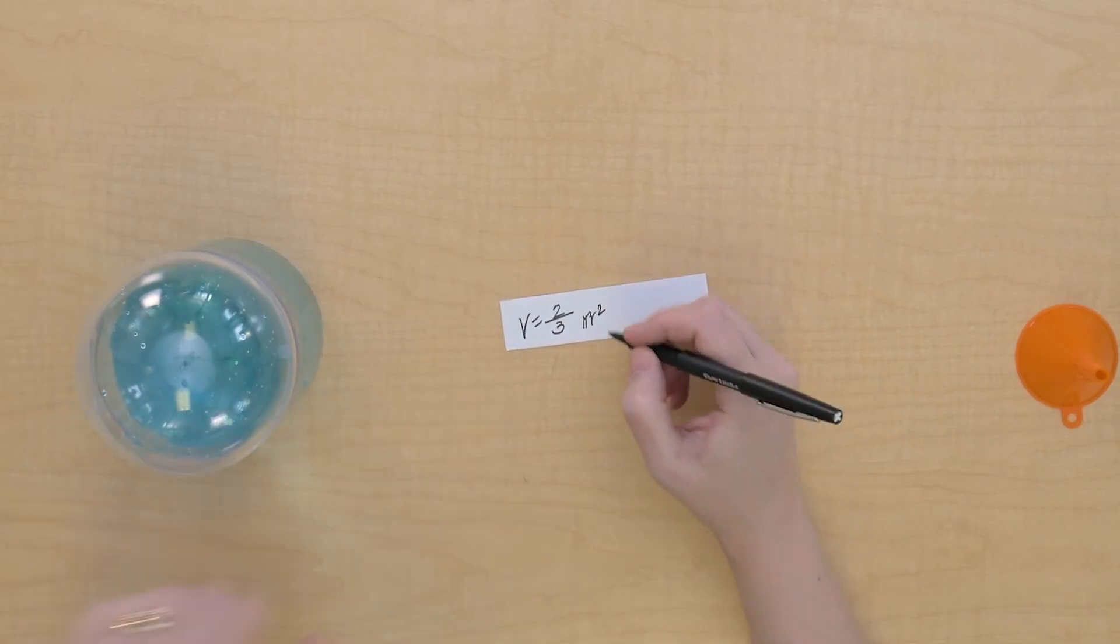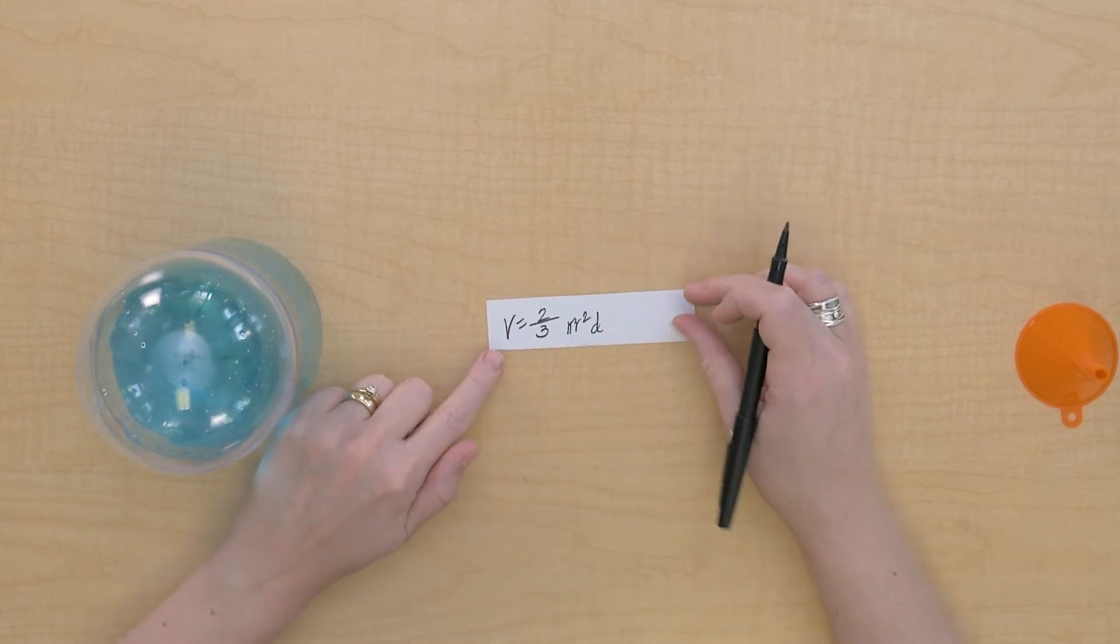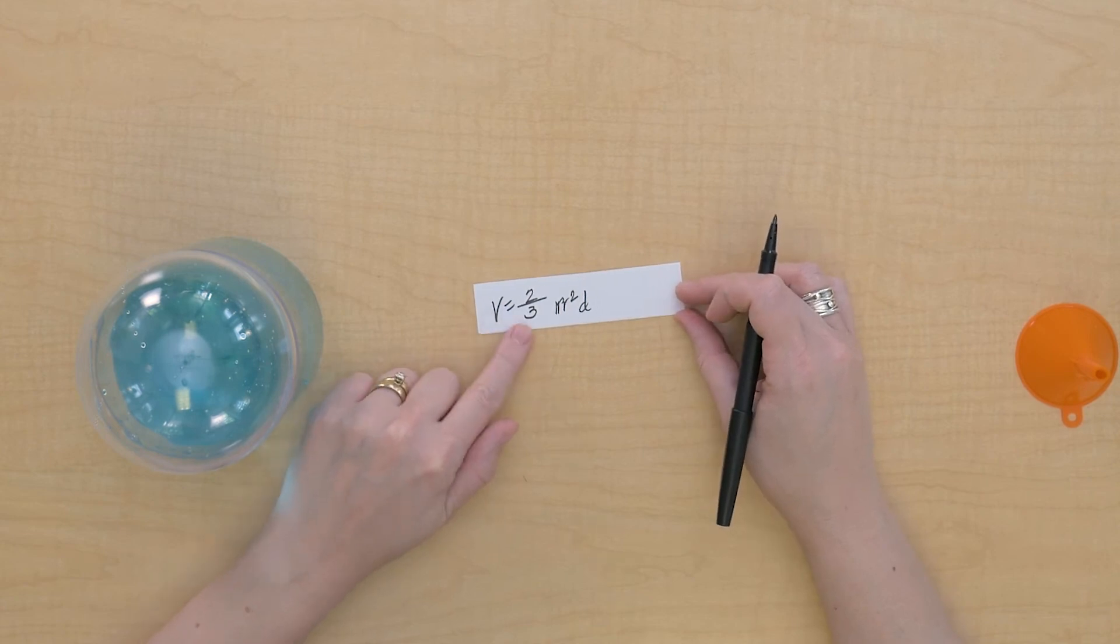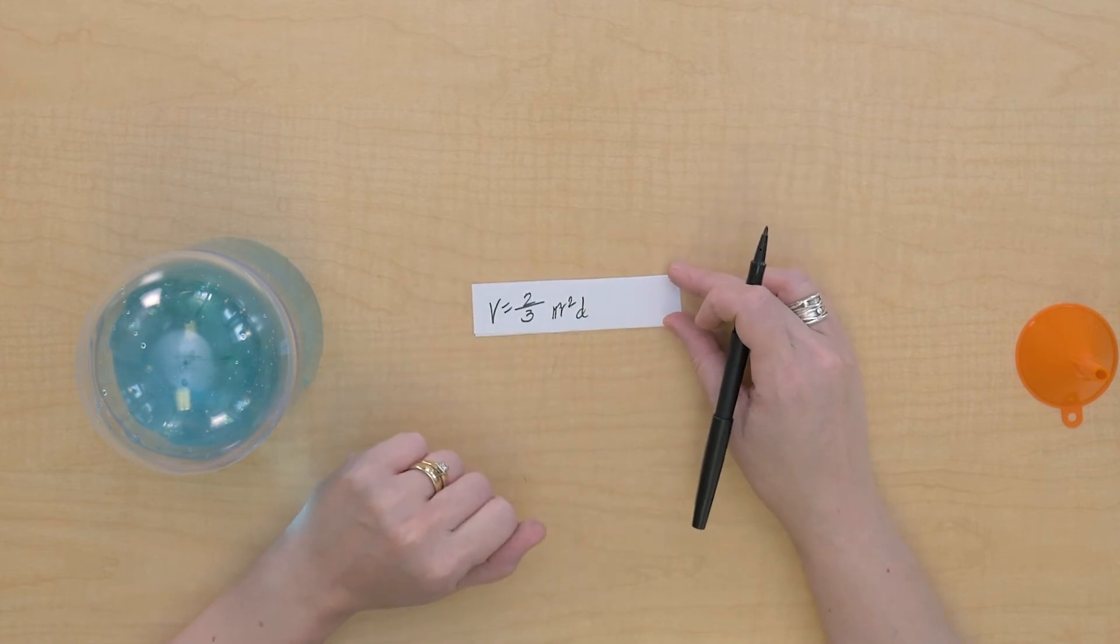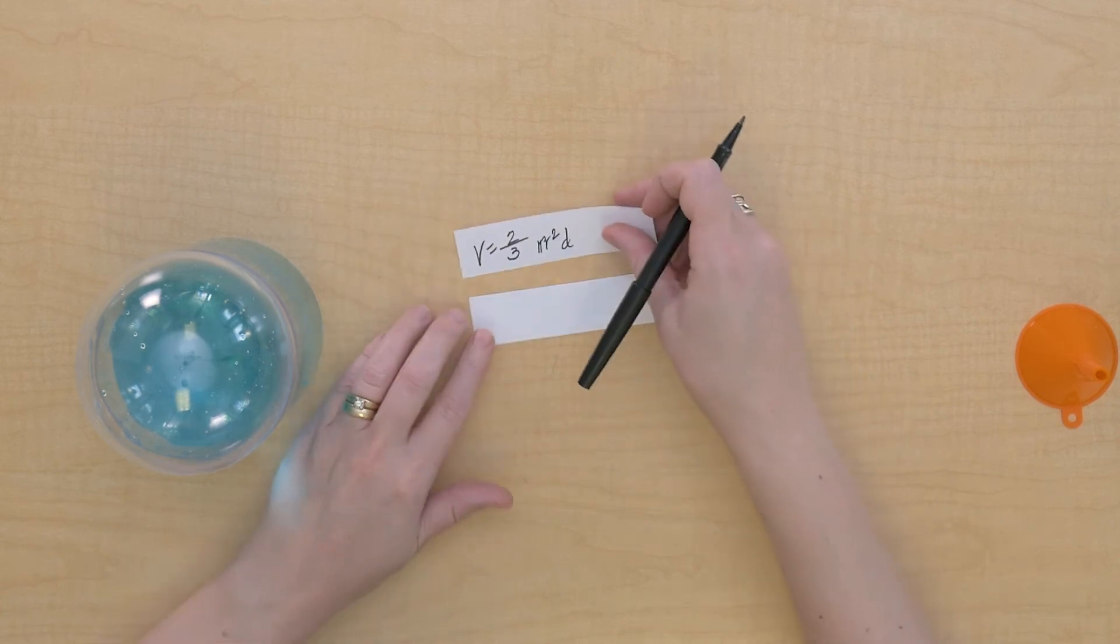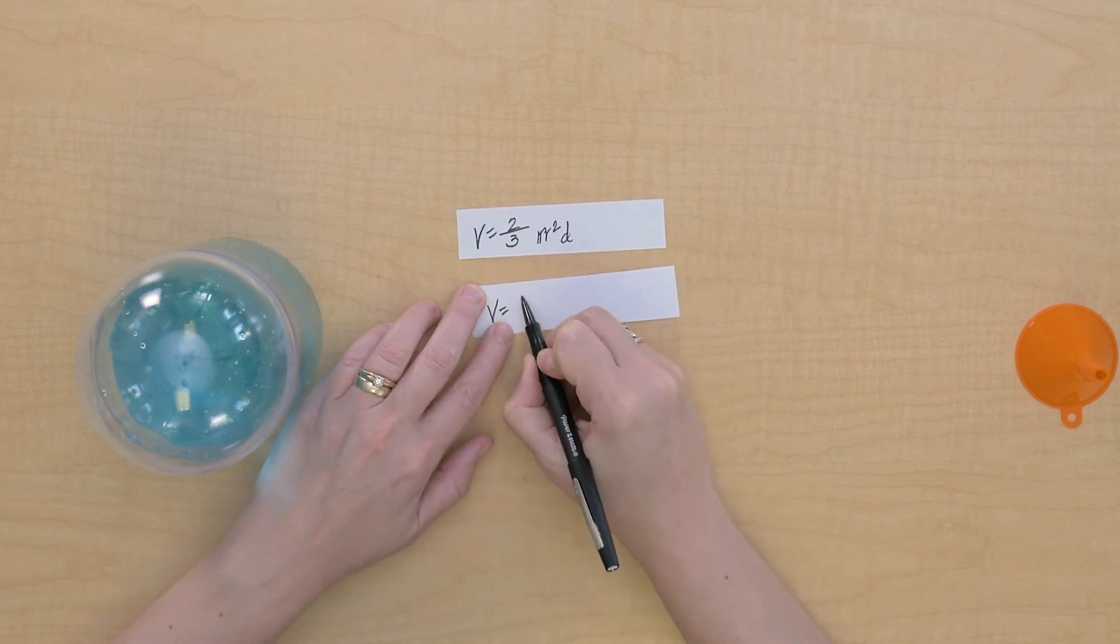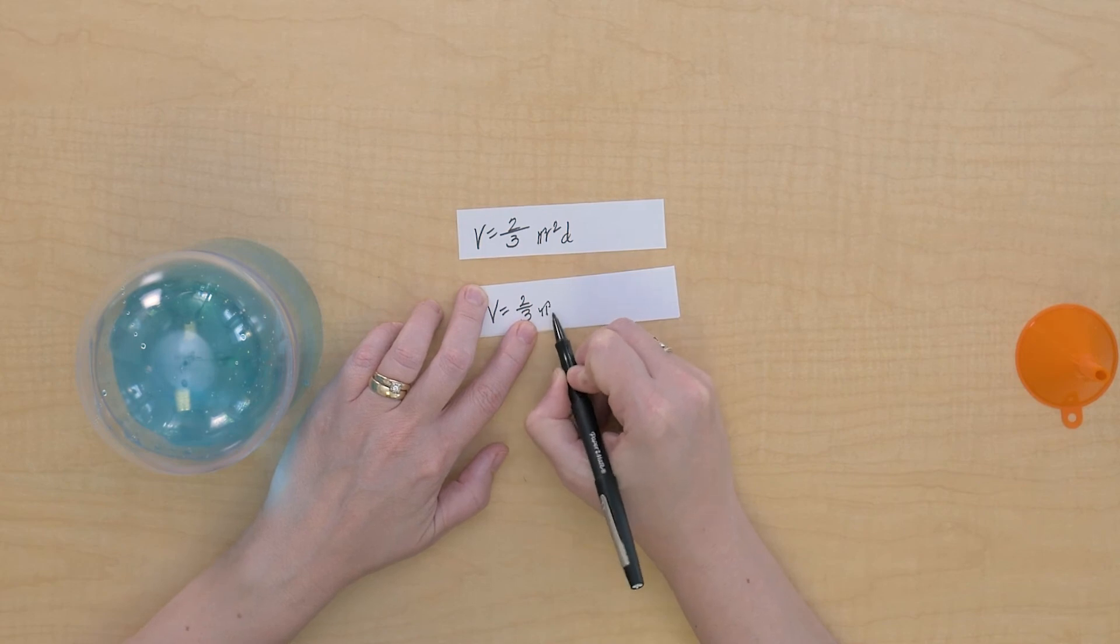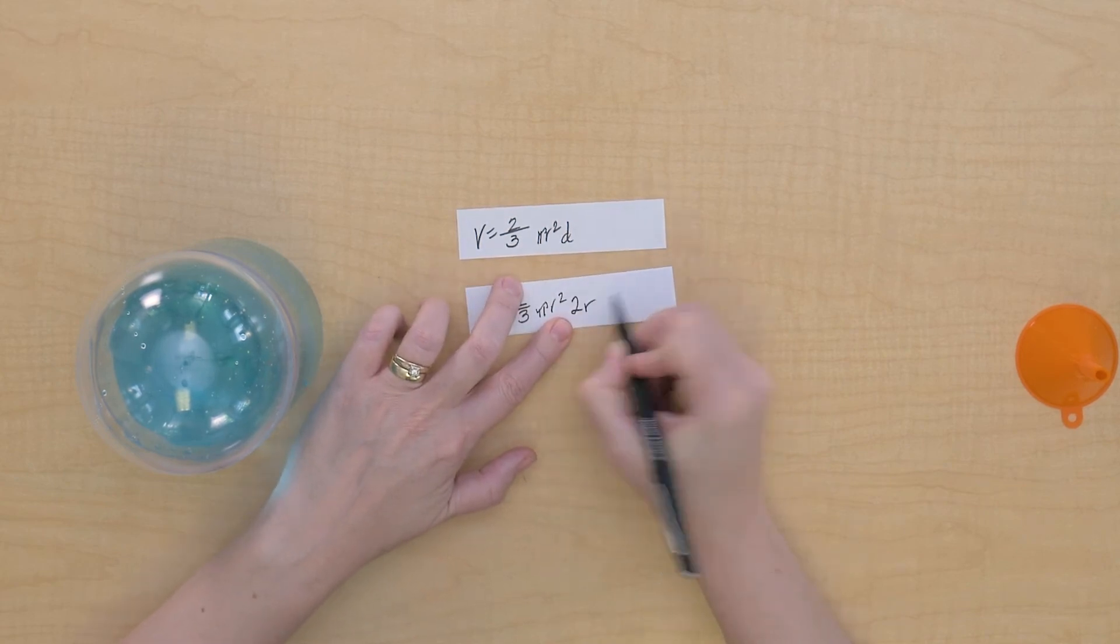And the height here is actually the diameter of the sphere. So we can then call that our height here. And here we've got a formula that the volume of a sphere equals two-thirds pi r squared times the diameter. Now, when we do formulas in geometry, we don't usually deal with diameters. We deal with radiuses. So let's change that and do two-thirds pi r squared times two radiuses.